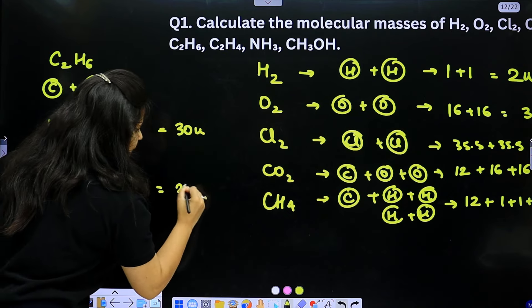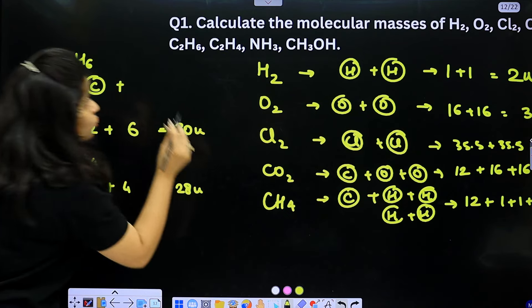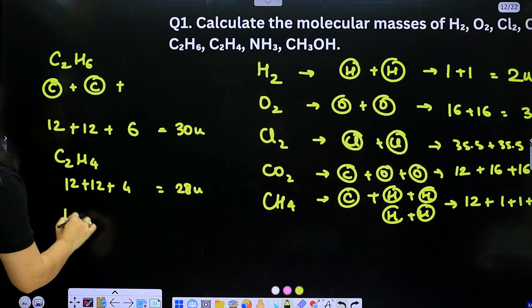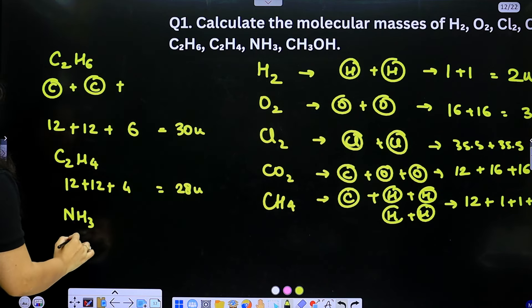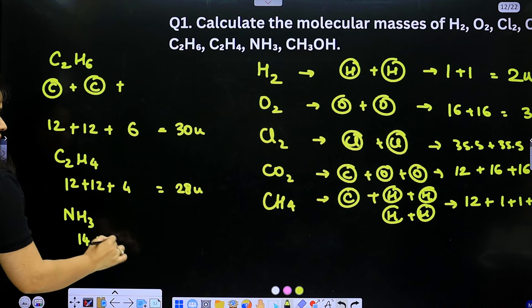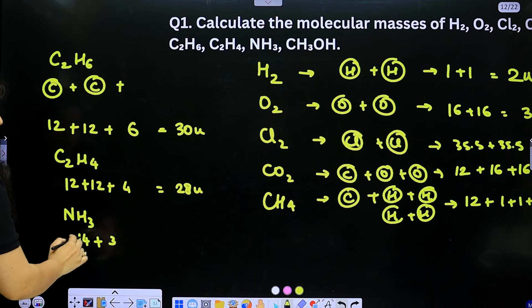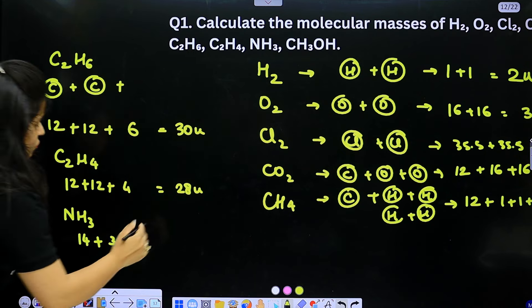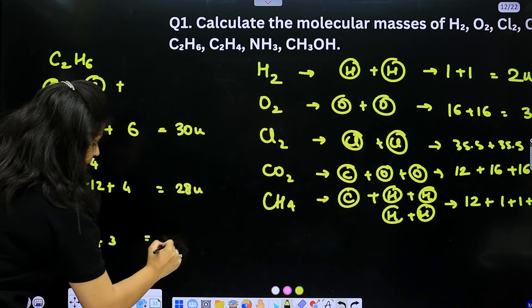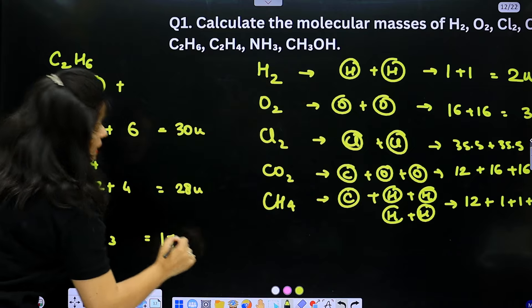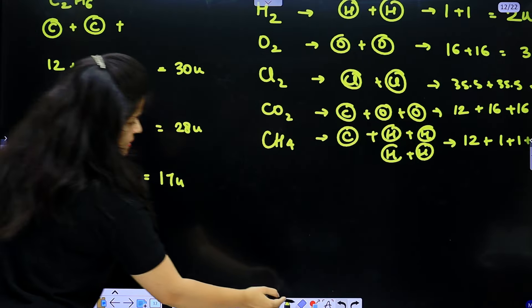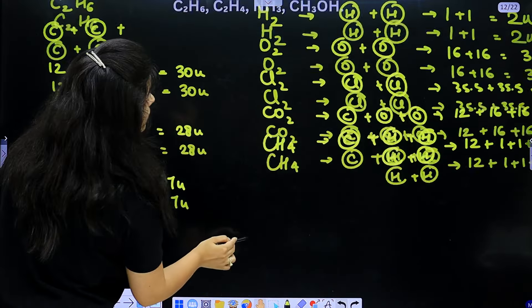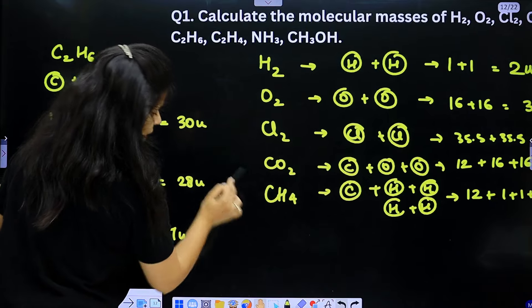For NH₃: nitrogen = 14u, 3 hydrogens = 3u; total = 17u.